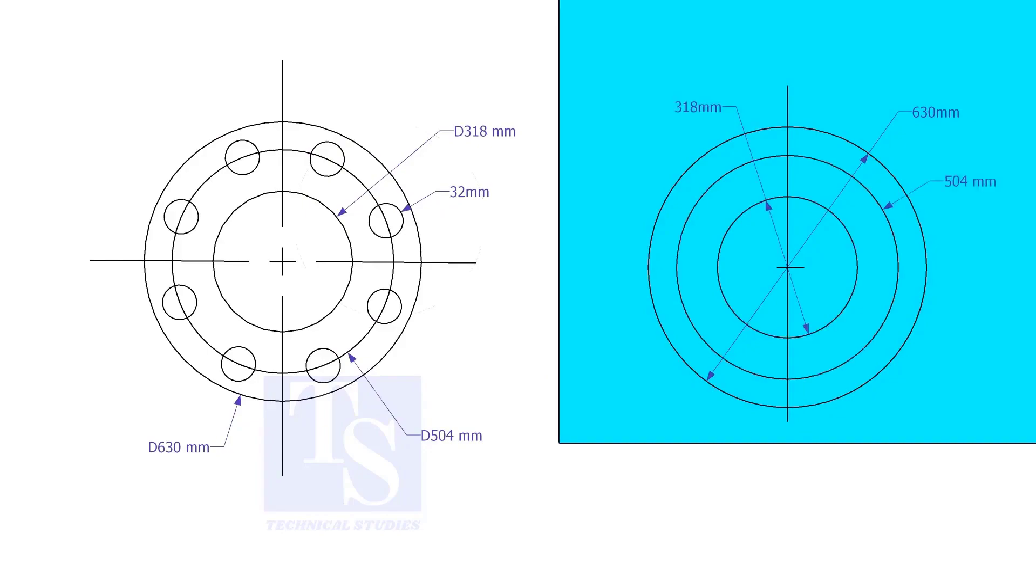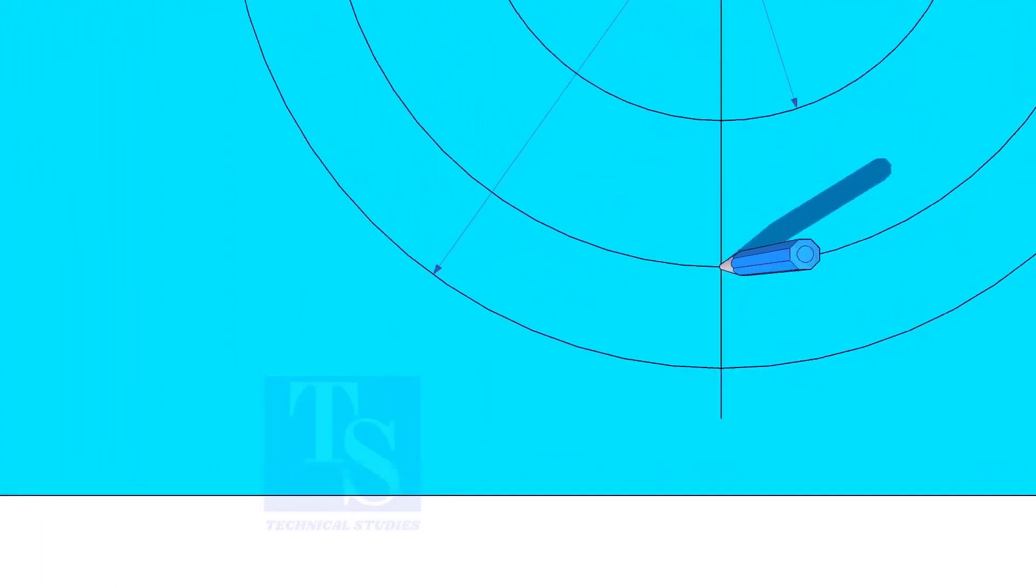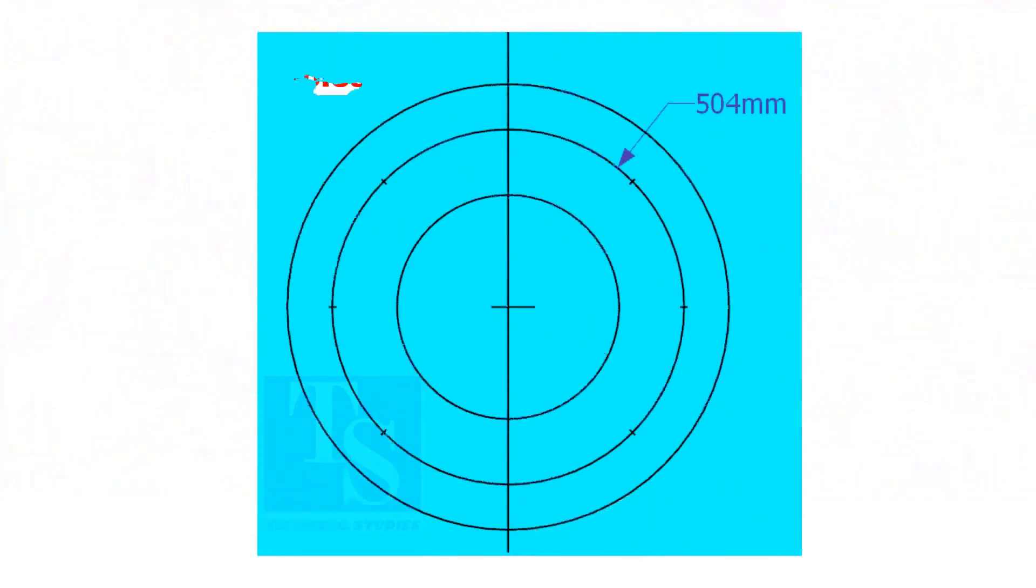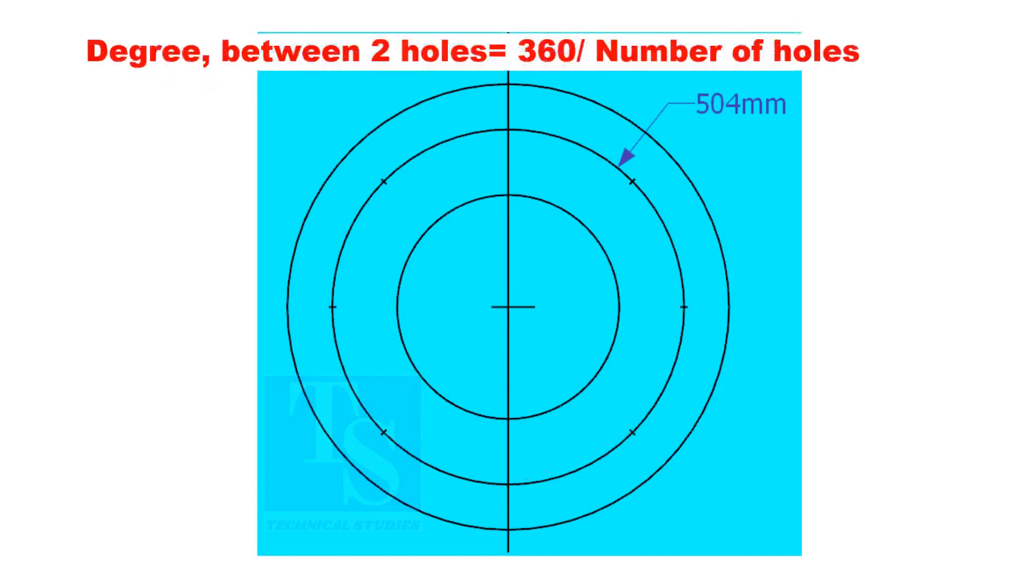Draw the PCD. Punch mark where the PCD circle cuts the center line. Since the number of the holes is 8, divide the PCD into 8 equal parts. To divide the circle easily and accurately, let us find the cord length of the holes. If you divide 360 by the number of holes, you will get the angle between two holes.